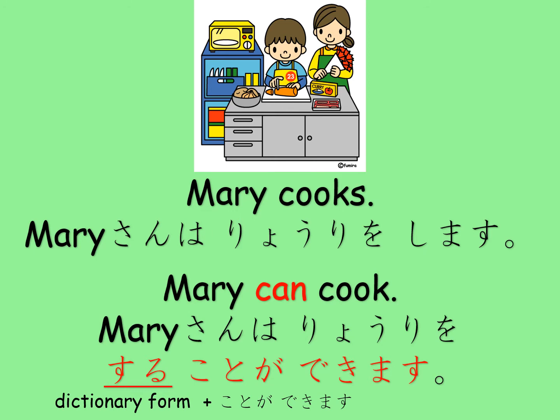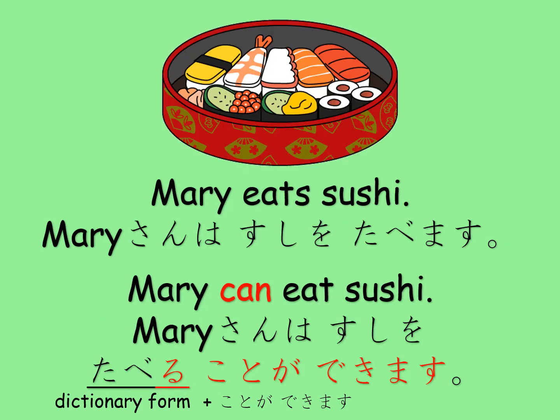If you want to add the meaning of 'can' to the sentence — for example, 'Mary eats sushi,' マリーさんは寿司を食べます — you can change the イチダン verb 食べます to its dictionary form 食べる and add ことができます。 The result is マリーさんは寿司を食べることができます。